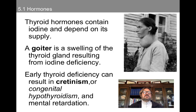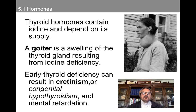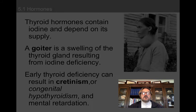Thyroid hormones contain iodine and depend on its supply. The enlargement on this individual's neck is a goiter — a swelling of the thyroid gland resulting from iodine deficiency. An early thyroid deficiency can result in cretinism or congenital hypothyroidism, as well as intellectual disability.